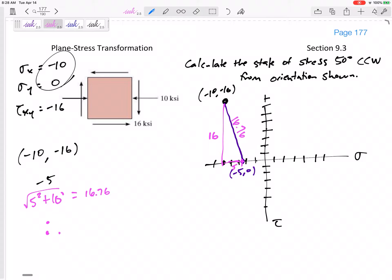Let me draw my four points. First, 16.76 up, 16.76 down. Then starting at negative 5, go to the right 16.76 and to the left 16.76. So I'd end up at 11.76 and negative 21.76.